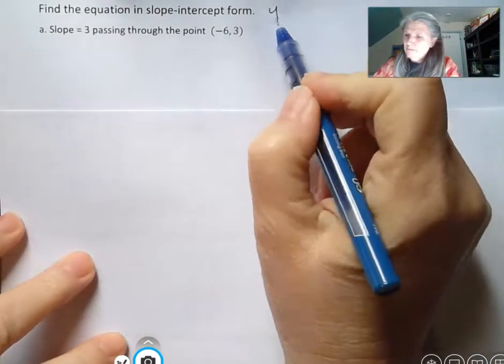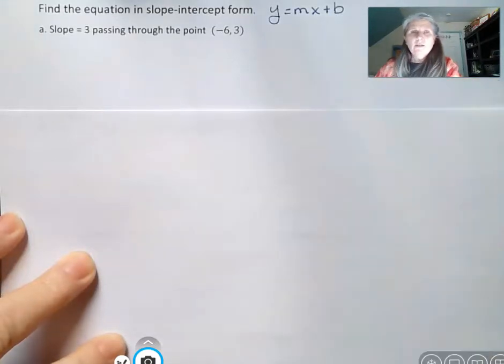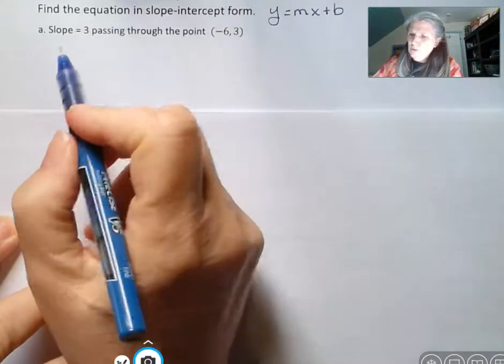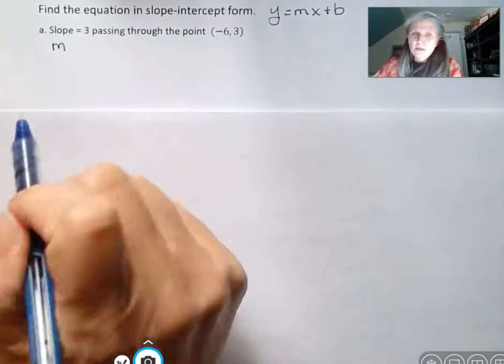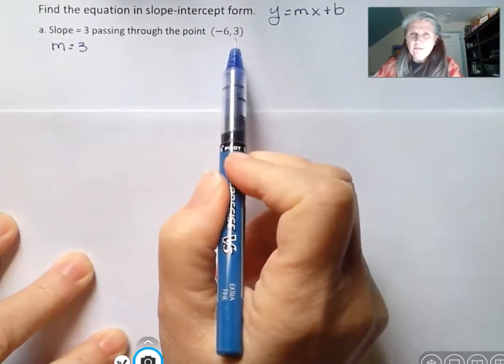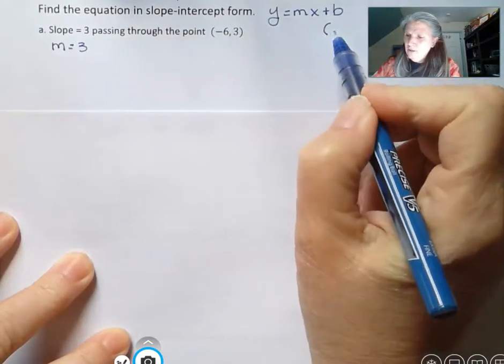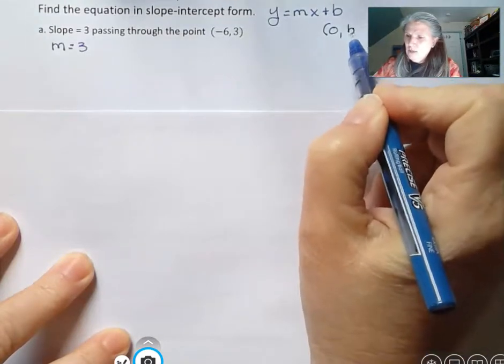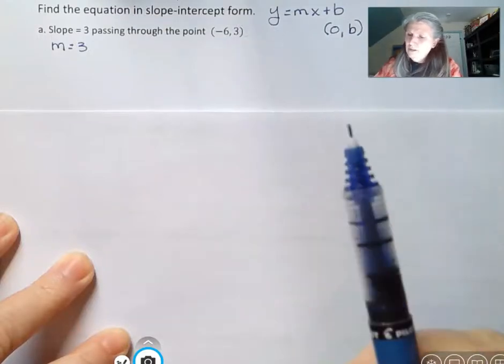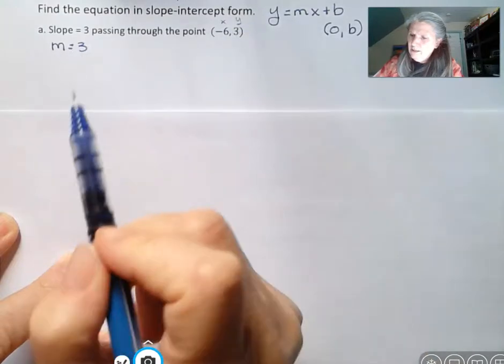And remember that form is y equals mx plus b. So in this problem they say the slope is 3, and remember slope is abbreviated with m, so our m is 3, and it's passing through a point negative 6, 3. b is our y-intercept, and a y-intercept has a 0 in the x place. So this is not the y-intercept. So we can find it though because we know this is our x and this is our y and that's our m.